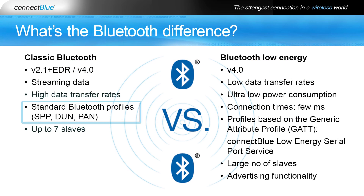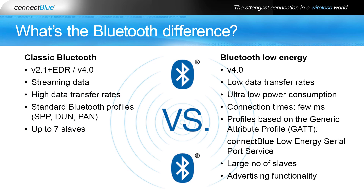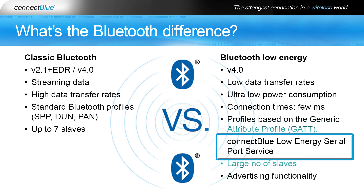As mentioned earlier, Classic Bluetooth has a determined set of profiles that, in essence, are application-defined behaviors that Bluetooth devices use to communicate with each other. Bluetooth Low Energy technology profiles are different from those used in Classic Bluetooth. Unlike Classic Bluetooth, product developers can develop their own profiles and services. For example, Connect Blue has developed a cable replacement service named the Connect Blue Low Energy Zero Port service, which is GATT-based and offers transparent serial communication.